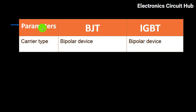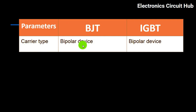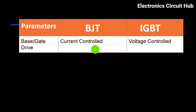The first column is parameters, then BJT and IGBT. Starting with carrier type: BJT is a bipolar device, and IGBT is also a bipolar device. For the drive type: BJT uses current control, while IGBT uses voltage control.